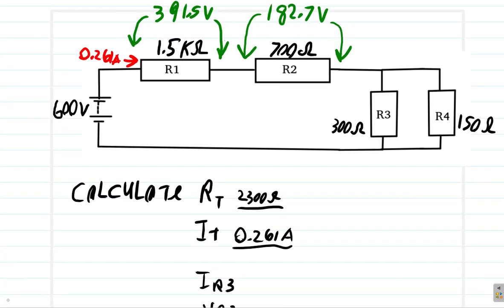We're going to find out what the voltage is. If you should connect a voltmeter between here and here, that will be the voltage drop across R3. Now, you see this 600 volts, you will have 391 volts drop from it, and then you will have 182.7 volts drop from it. The remaining, what remains, is going to be the voltage here.